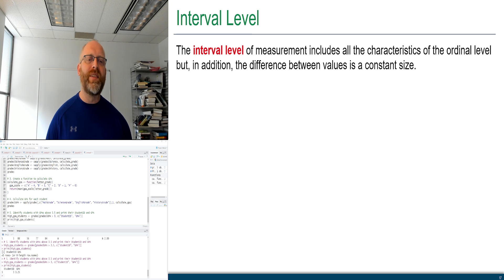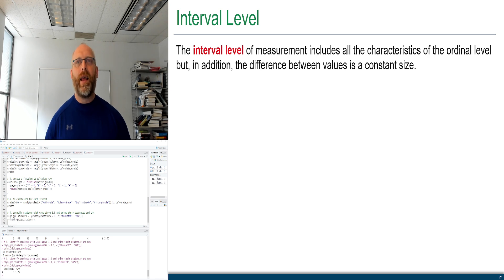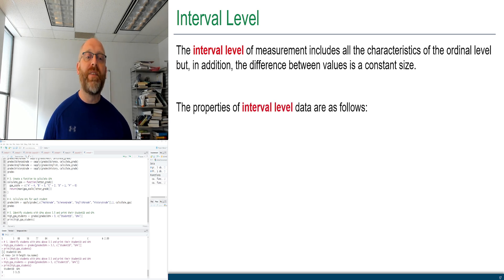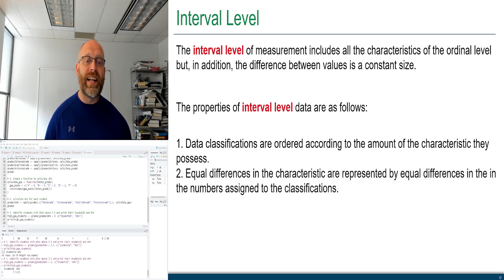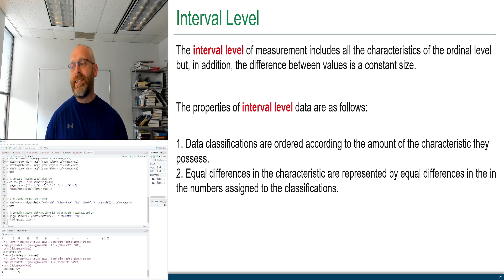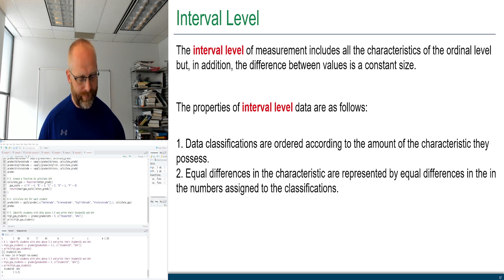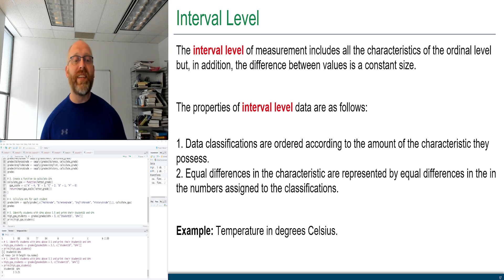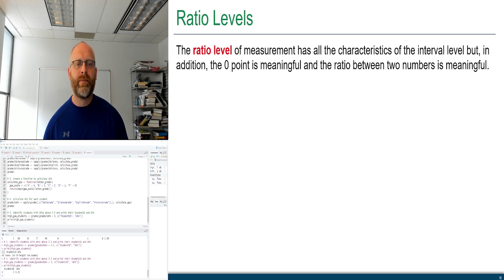At the interval level, data has all characteristics of the ordinal level, plus the difference between values is a constant size. Data classifications are ordered by the amount of characteristic they possess, and equal differences in characteristics are represented by equal numerical differences. For example, temperatures in degrees Celsius — the difference between 1°C and 2°C is the same as between 2°C and 3°C.